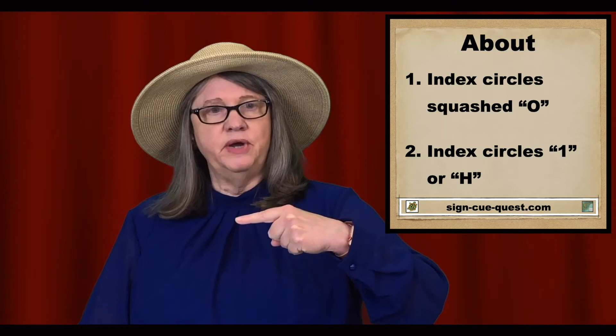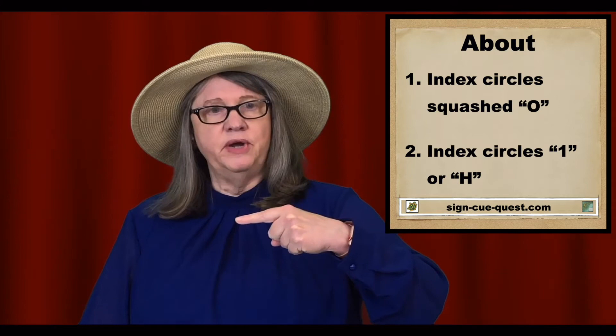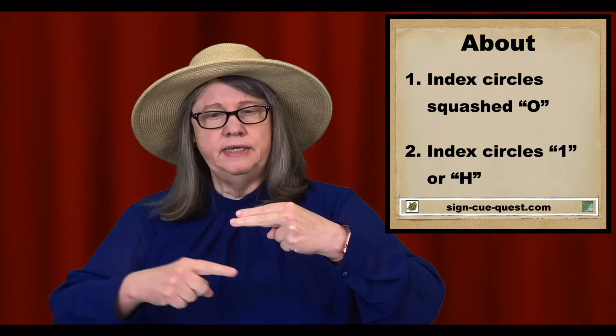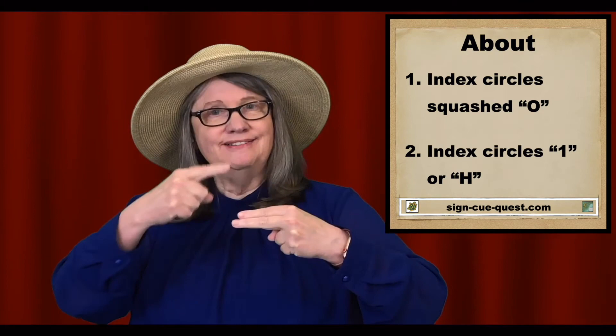The second way of signing it is the same sign, but the non-dominant hand is a sideways one, or it could be a sideways H, and your dominant index circles it the same way — about.